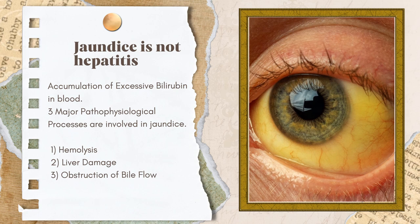If any patient has a yellowish discoloration of eyes, we presume it will be hepatitis — but this is not always the case. Jaundice indicates accumulation of excessive bilirubin in blood. Excessive bilirubin can accumulate anywhere along the entire pathway: either due to excessive RBC destruction (hemolysis), liver damage (hepatitis), or obstruction to bile flow.